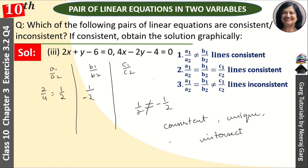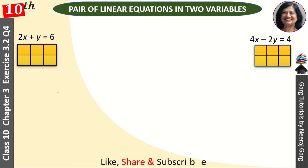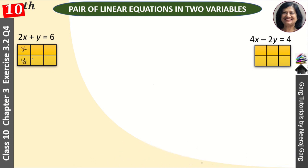Now let's design the graph since we have a consistent case. For the equation, when x is 0, y is 6, and when x is 3, y is 0. Let's also take the other equation: when x is 1, y is 0, and when x is 2, y is 2.